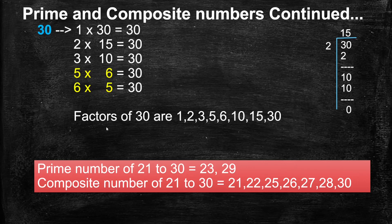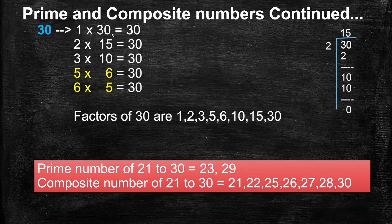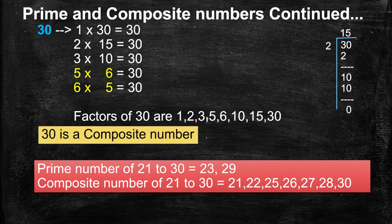Factors of 30 are 1, 2, 3, 5, 6, 10, 15, 30. We learn that a number with more than 2 factors is called a composite number. So 30 is a composite number.